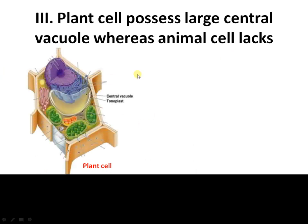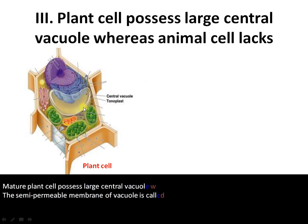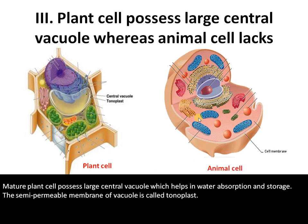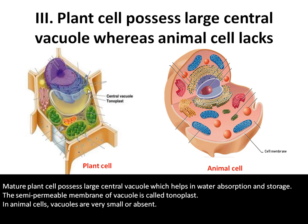In plant cells, the most prominent organelle is a vacuole. There is a large central vacuole whose membrane is called the tonoplast. The vacuole is a site where many materials like minerals, water, salts, and many waste materials are stored. Whereas in animal cells, vacuoles are very small or absent. The large vacuole in plant cells has high concentration, so water molecules enter passively by osmosis, which helps in absorption.